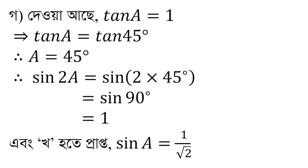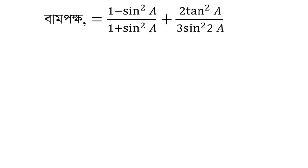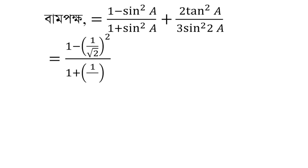So, we have to write: sin 2a is 1, sin 2a is 1 by root 2. So, sin a is 1 by root 2, sin squared a is 1 by root 2 squared, and sin squared a is 1 by root 2 squared.